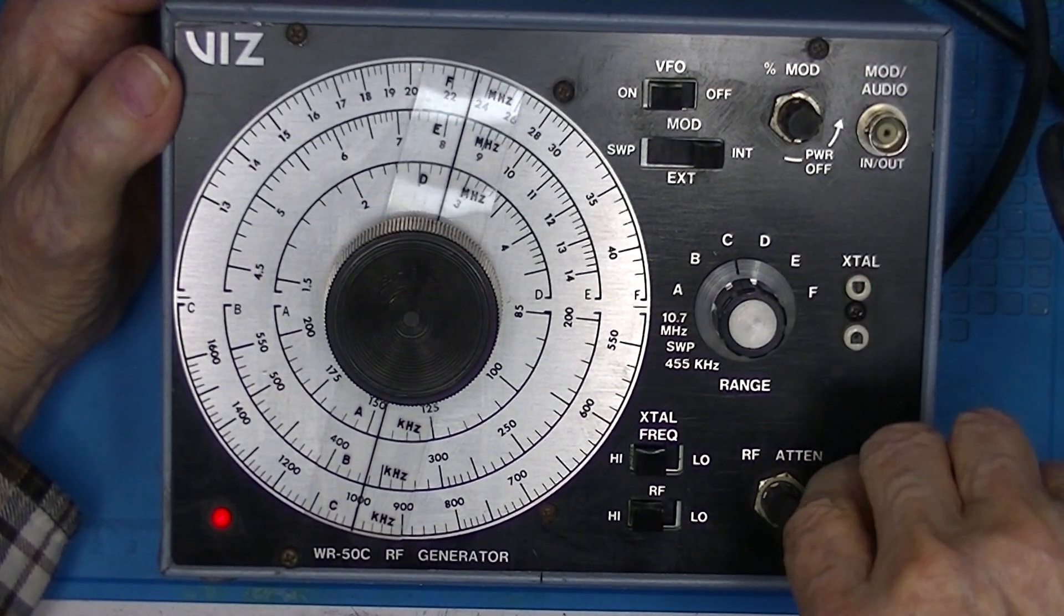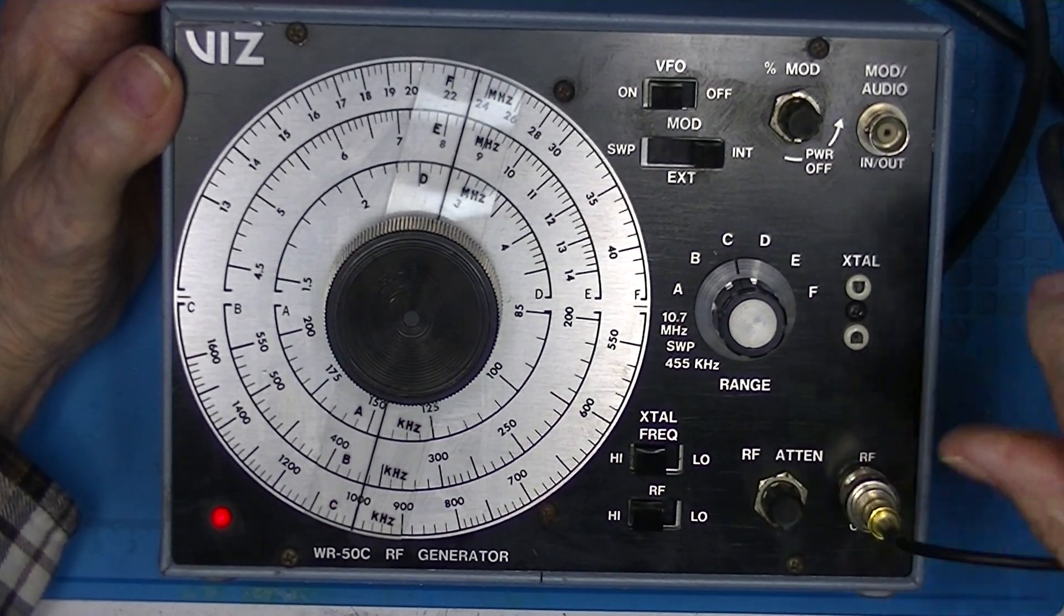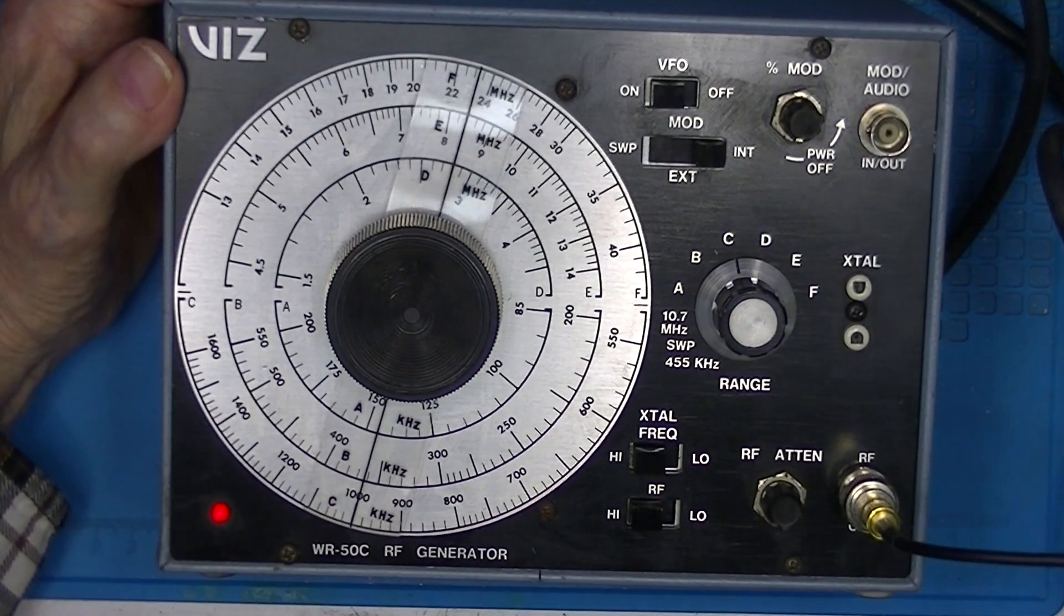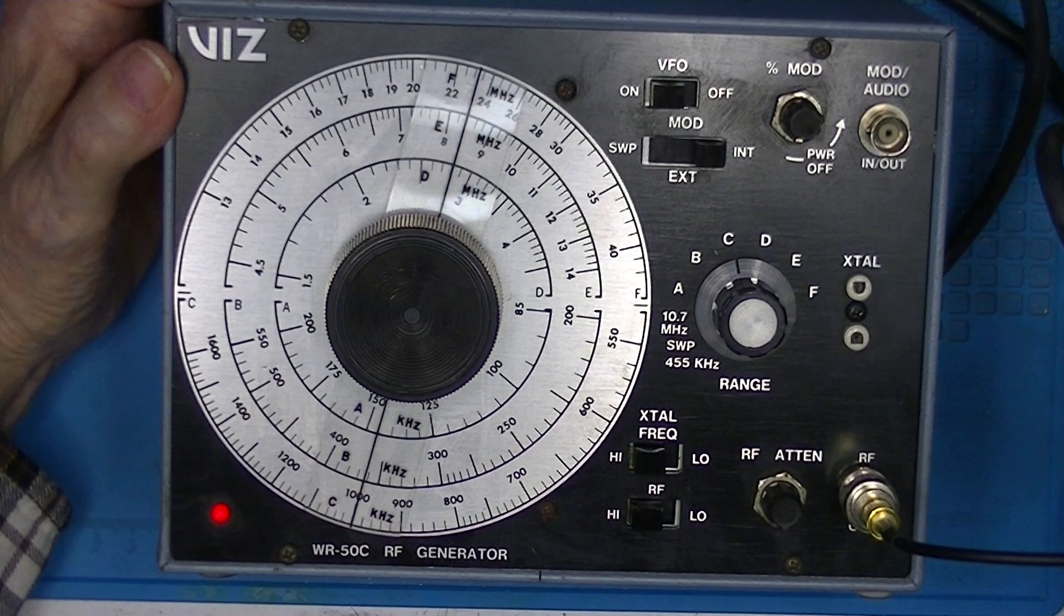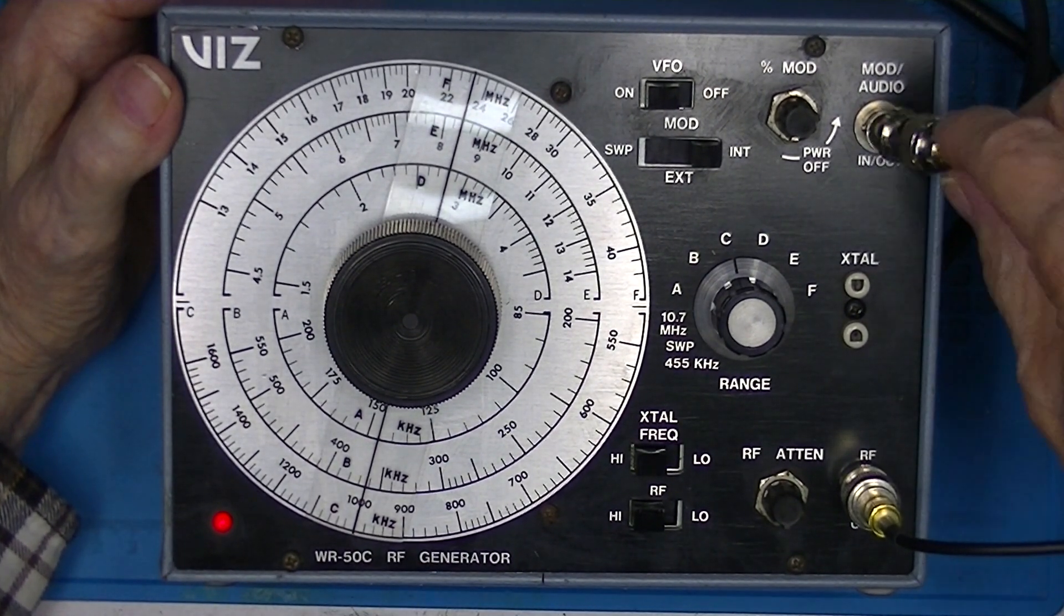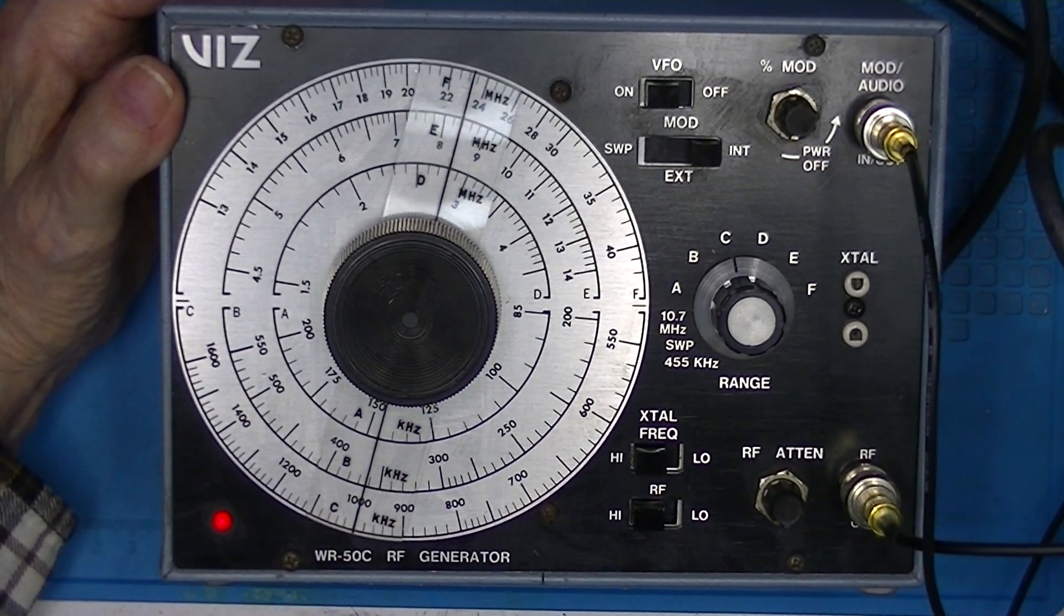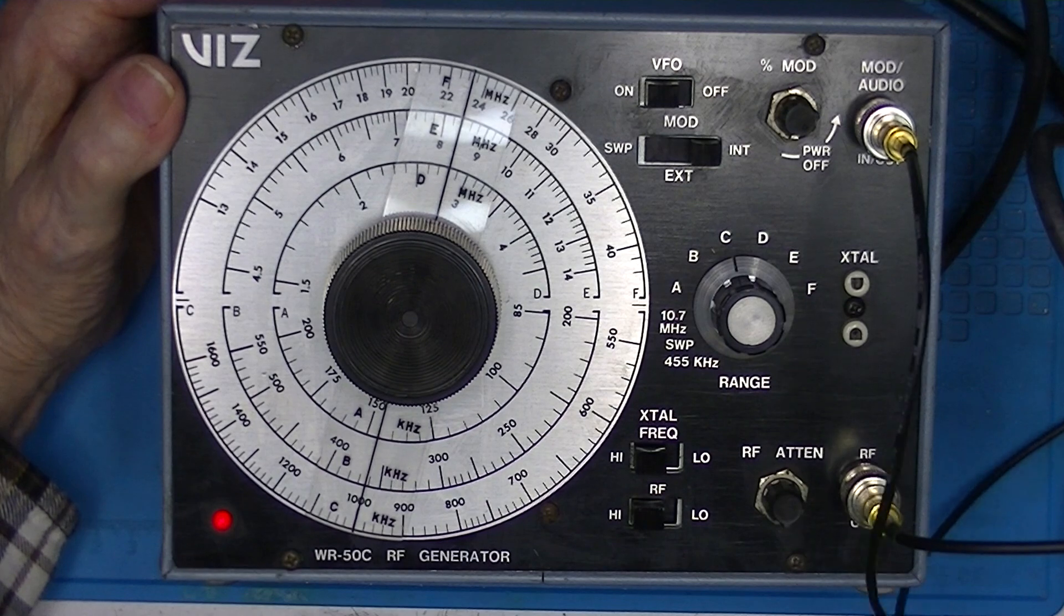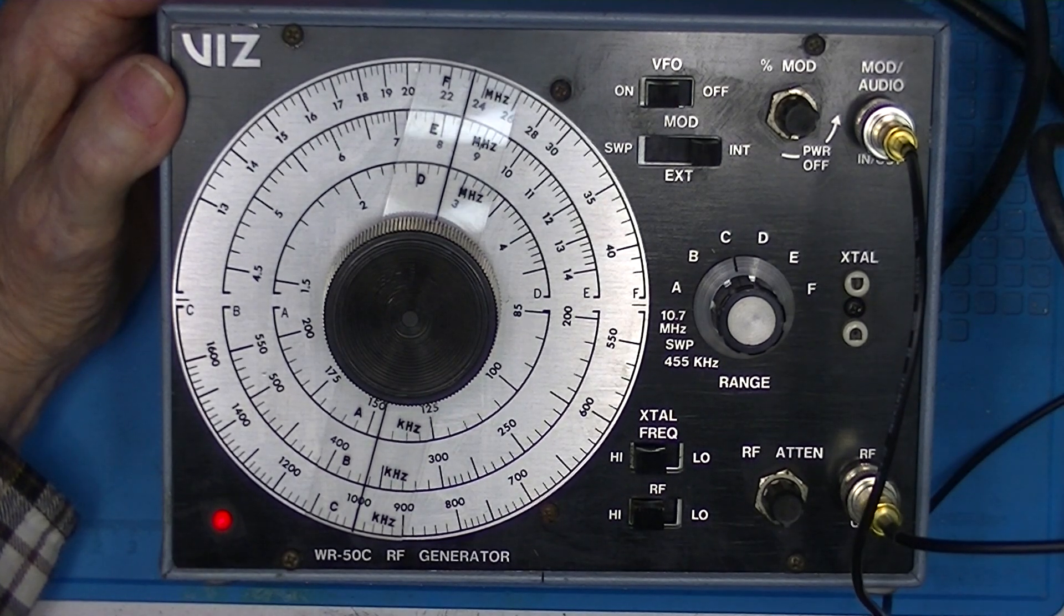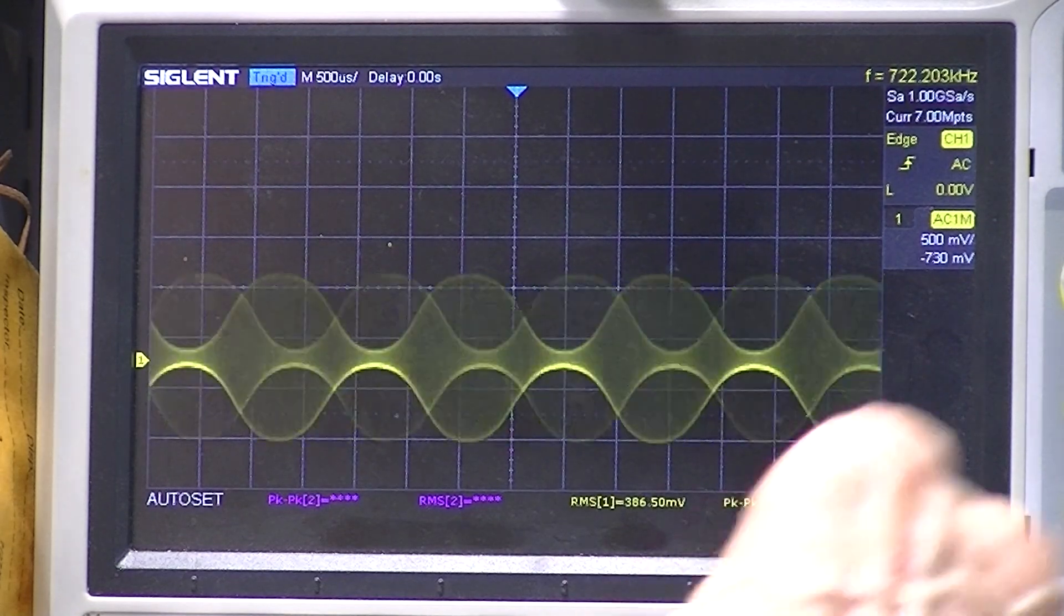So the yellow will be the modulated signal. And for ease of synchronizing, I'm going to take a sample of the audio output and I'm going to connect it to the auxiliary input of the oscilloscope.